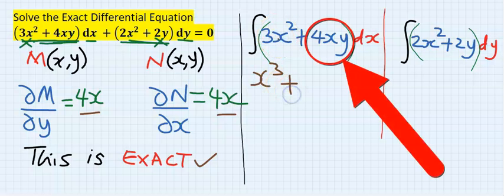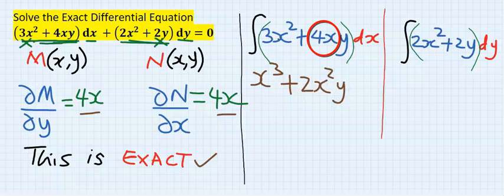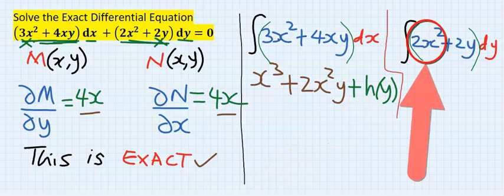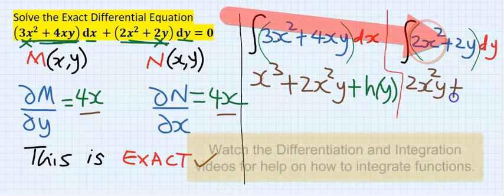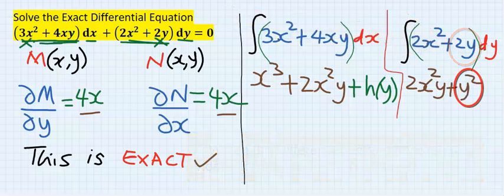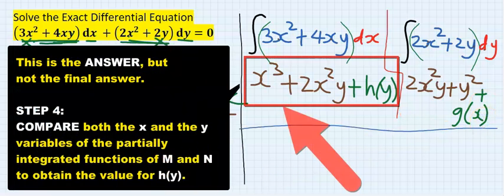Integrating the next term partially, just with respect to x, I get 2x squared y. But because I am doing a partial integration with respect to y held constant, this introduces a function of y, h(y). Also, integrating N partially with respect to y gives a result, and because x is treated as a constant, it introduces a function of x, g(x).